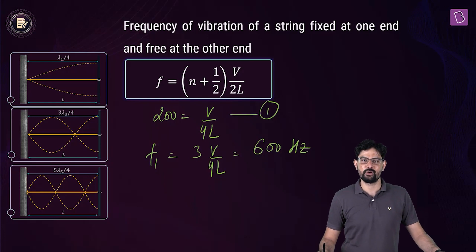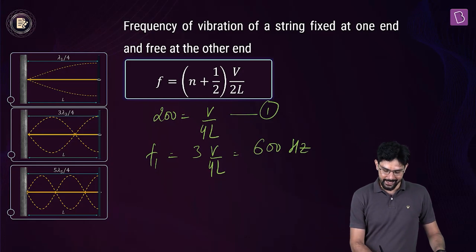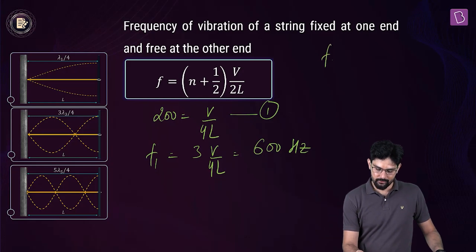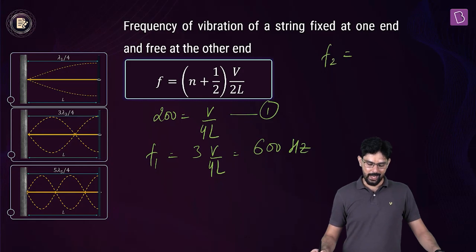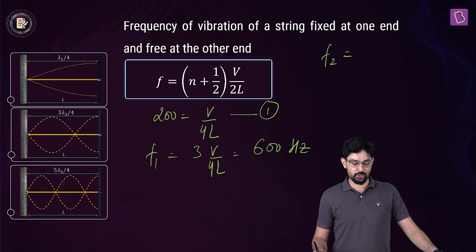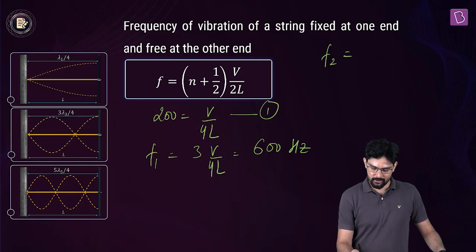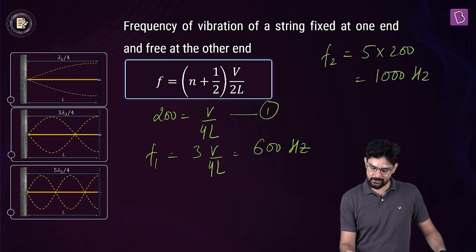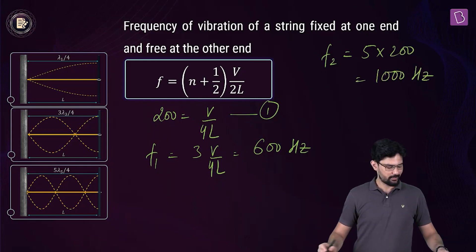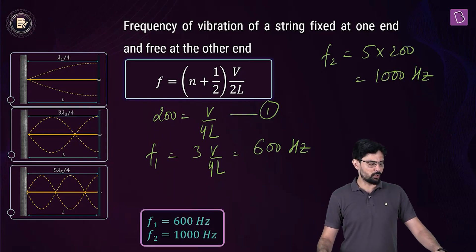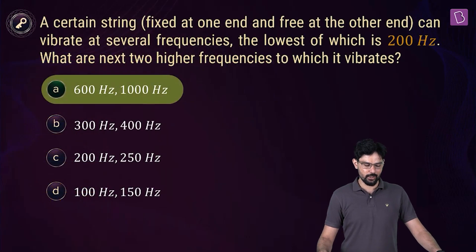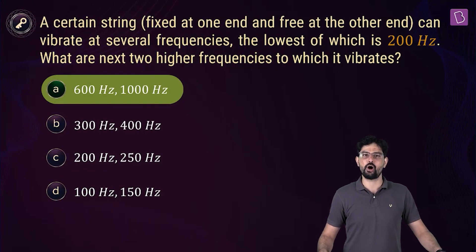So we have both overtones: 600 Hz and 1000 Hz. Option A is the right option.